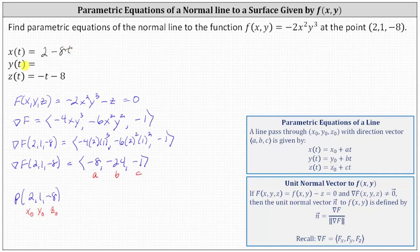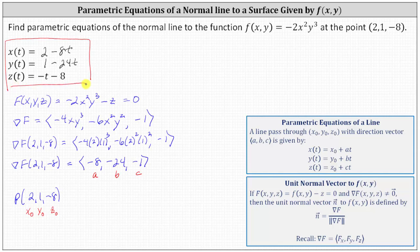And y(t) = y₀ + bt = 1 - 24t, since b = -24. These parametric equations give us a line normal to the surface defined by f(x, y) at the point (2, 1, -8).